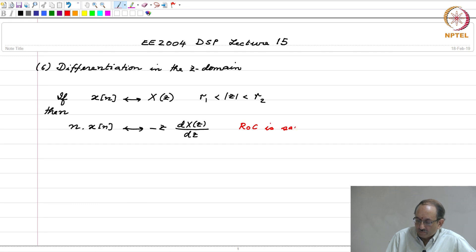ROC is same assuming rational X of Z, which is the class that we are interested in. The proof is pretty straightforward.